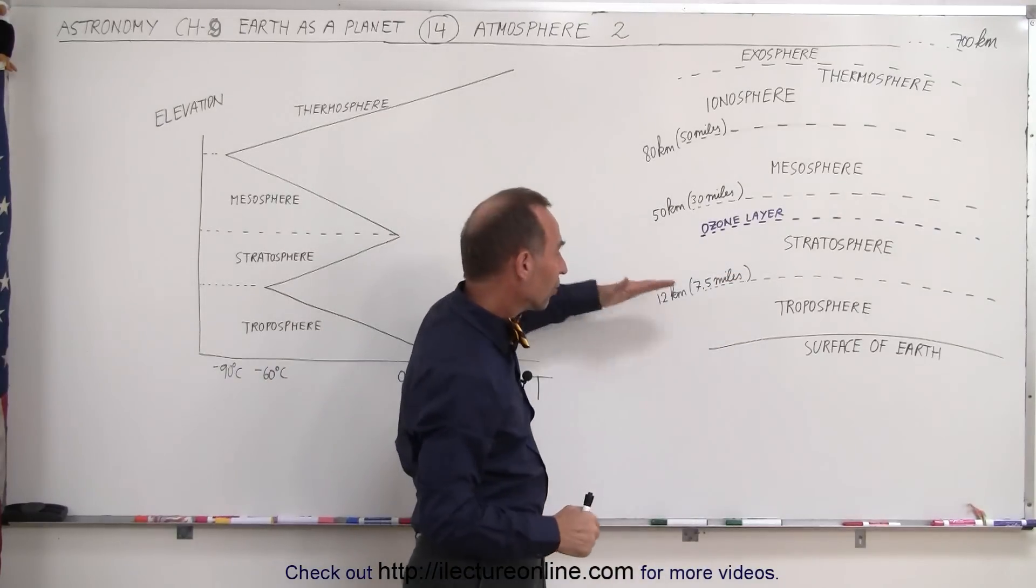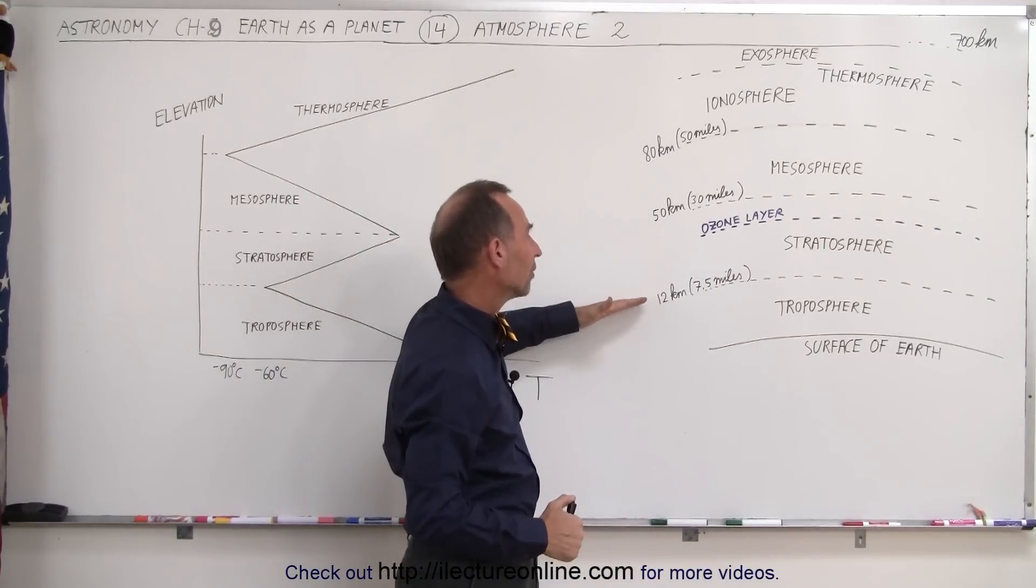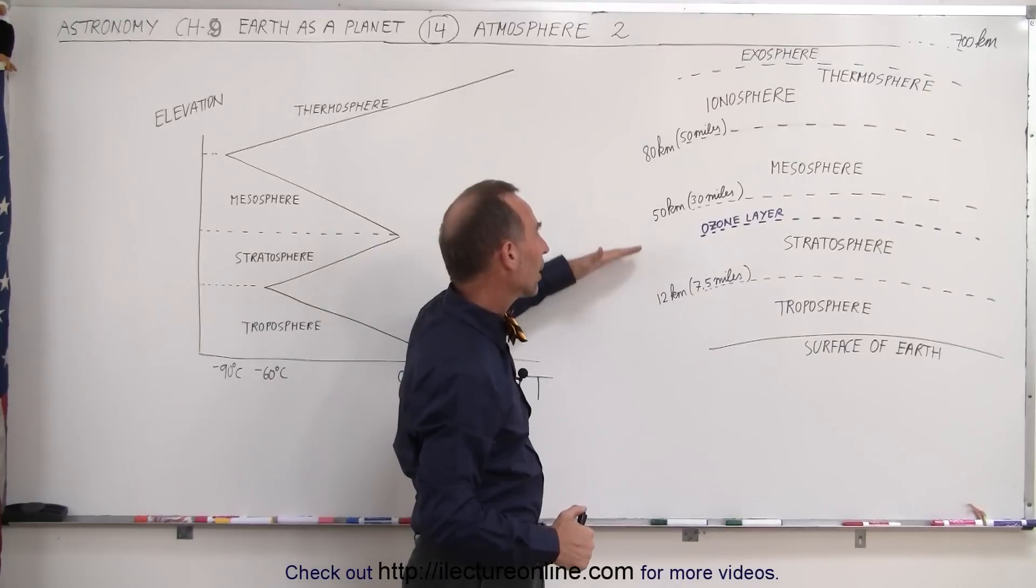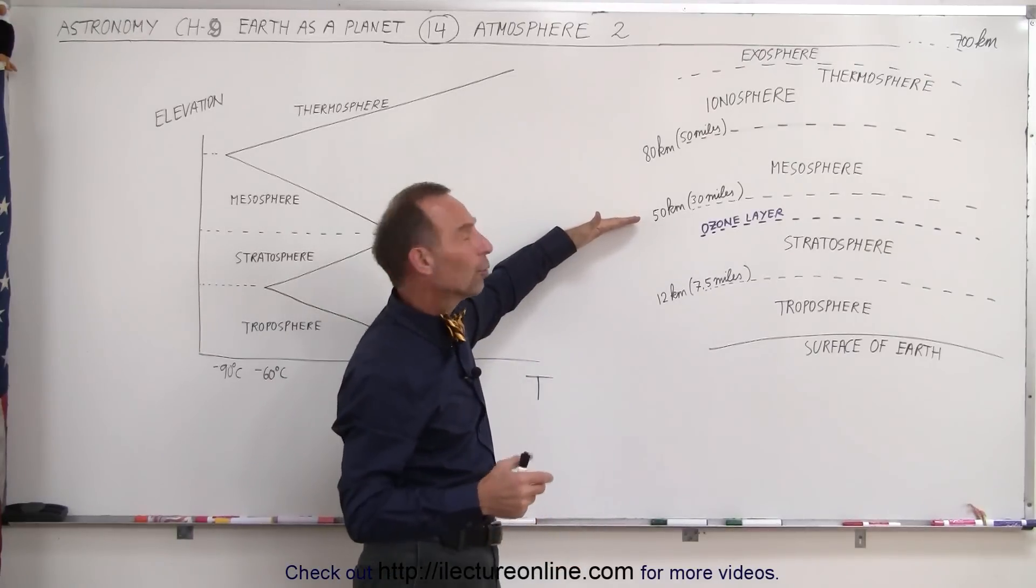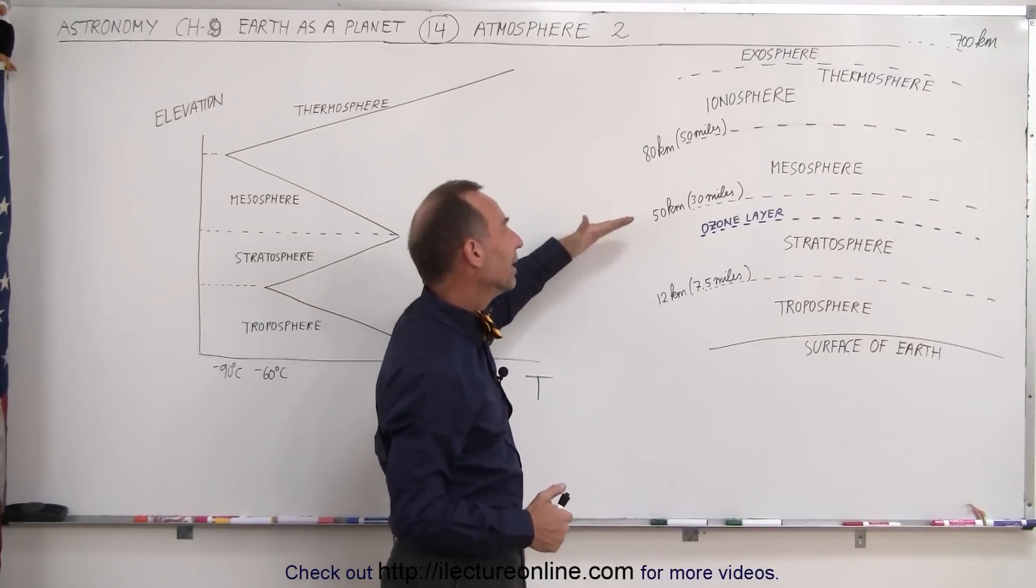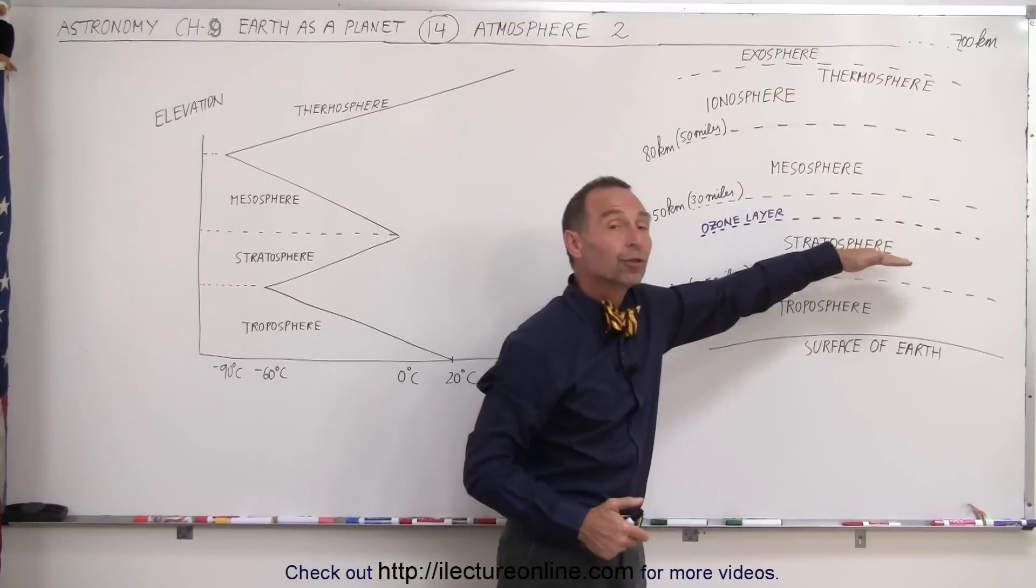The stratosphere starts up at about seven and a half miles or 12 kilometers and goes all the way up to about a height of 50 kilometers, which is about 30 miles. It is within the stratosphere that we have the ozone layer, the layer that protects us against low-energy UV radiation.